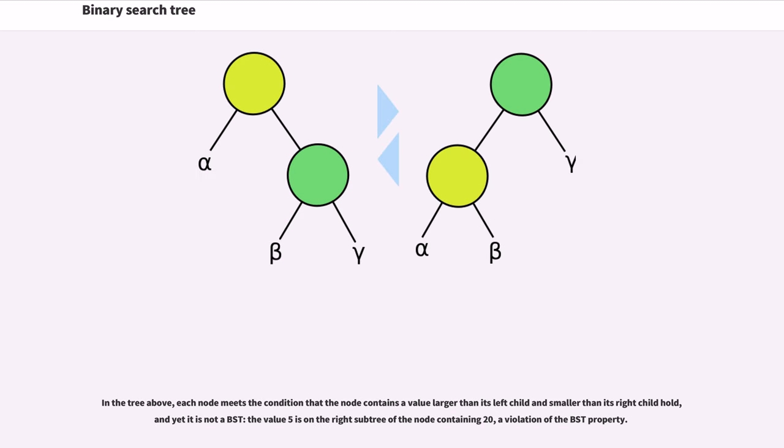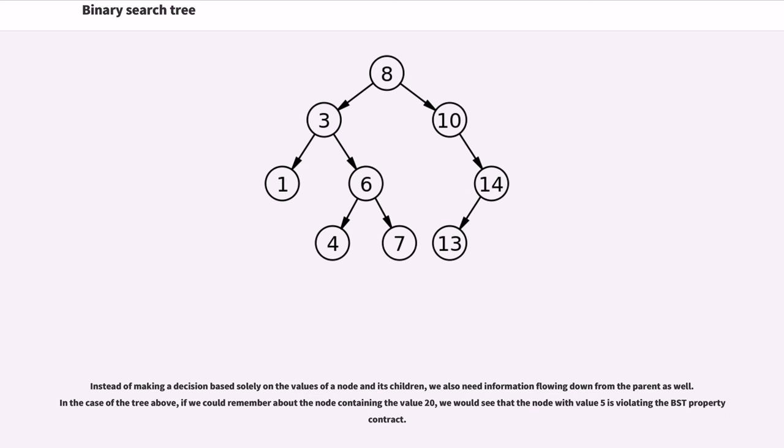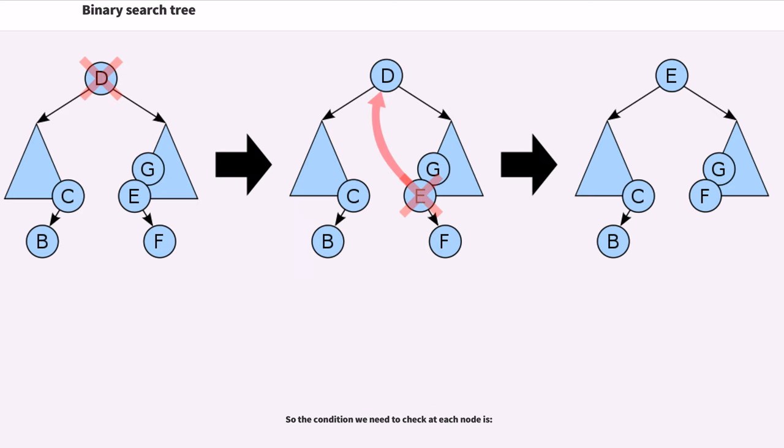In the tree above, each node meets the condition that the node contains a value larger than its left child and smaller than its right child hold, and yet it is not a BST. The value 5 is on the right subtree of the node containing 20, a violation of the BST property. Instead of making a decision based solely on the values of a node and its children, we also need information flowing down from the parent as well. In the case of the tree above, if we could remember about the node containing the value 20, we would see that the node with value 5 is violating the BST property contract.